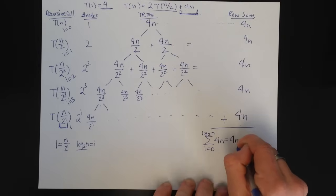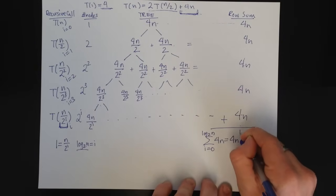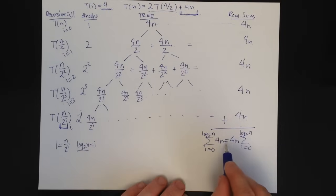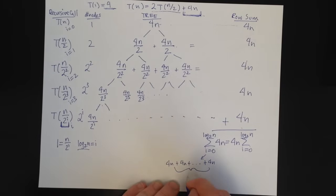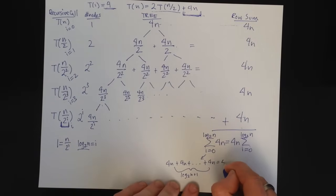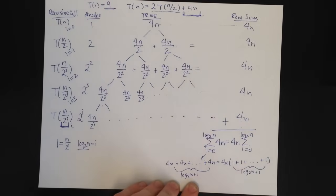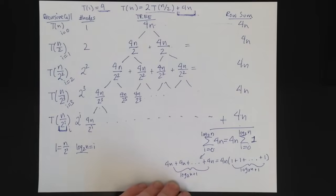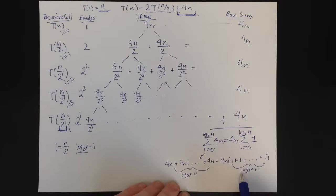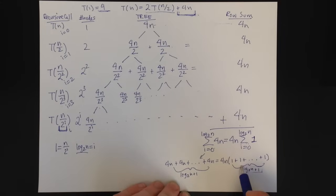And if you don't see this, look at it this way. This thing is 4n plus 4n plus 4n a bunch of times. Log base 2 of n plus 1 times. And what I can do is say, well, that's equal to 4n times 1 plus 1 plus 1 log base 2 of n plus 1 times. So that's how I made this flip here. Sorry, that might be a little confusing. We need a one there. And then as I kind of noted here, this sum is log base 2 of n plus 1.